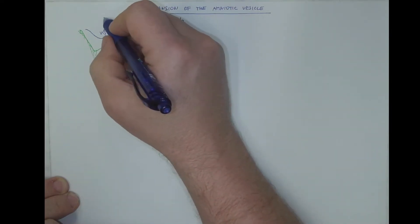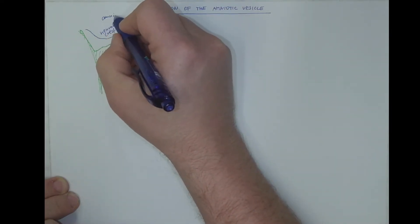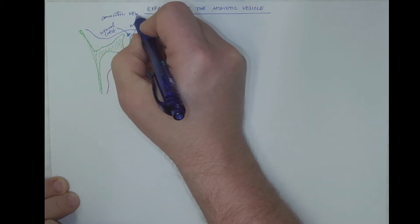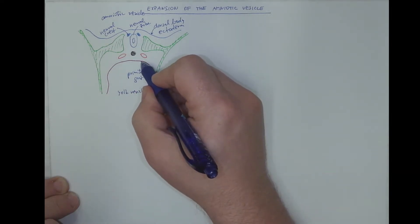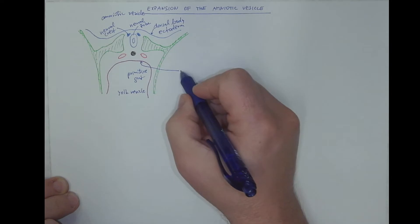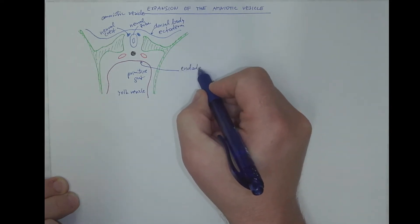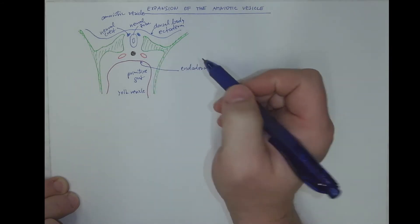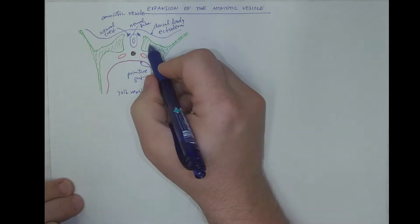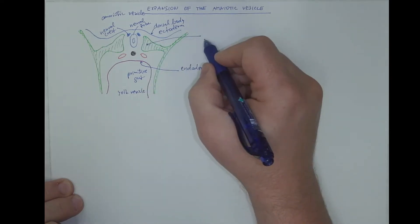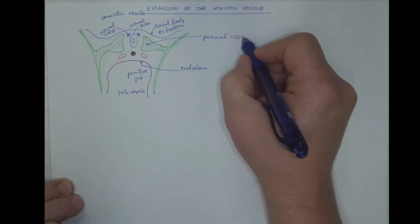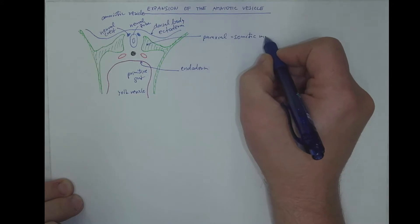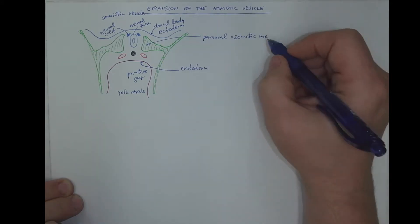Because here is the space of the amniotic vesicle, right? The primitive gut is lined with the endoderm. And let's label also the mesoderm with this part, which is the paraxial or somatic mesoderm. Because it will be segmented into body segments called somites.